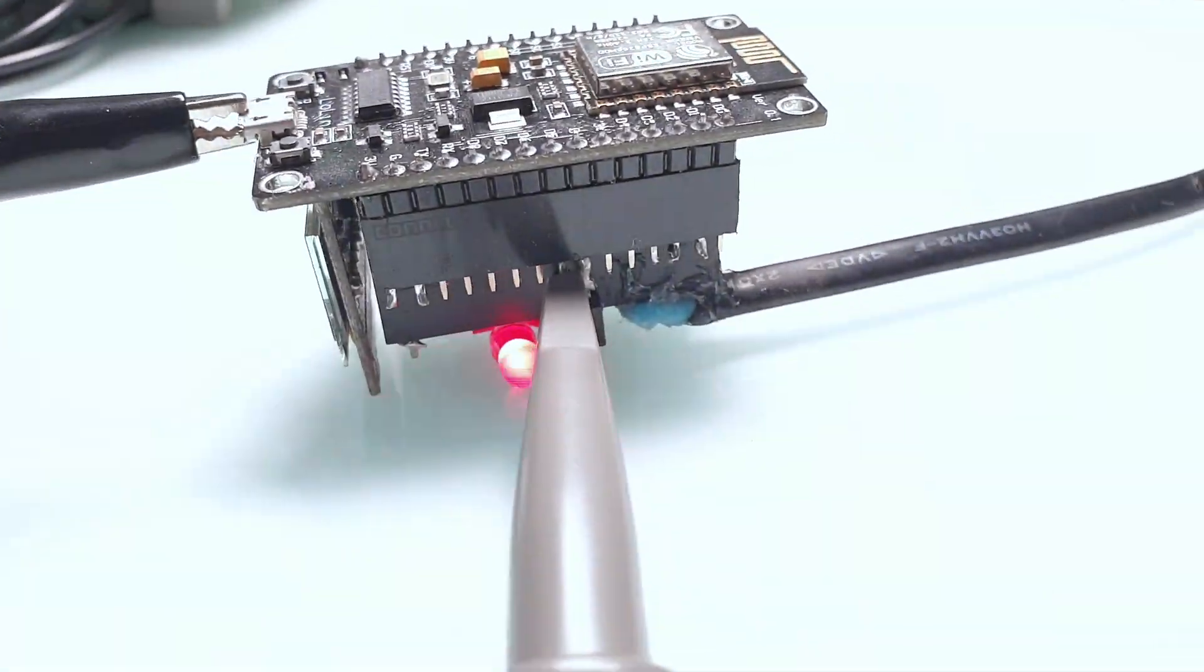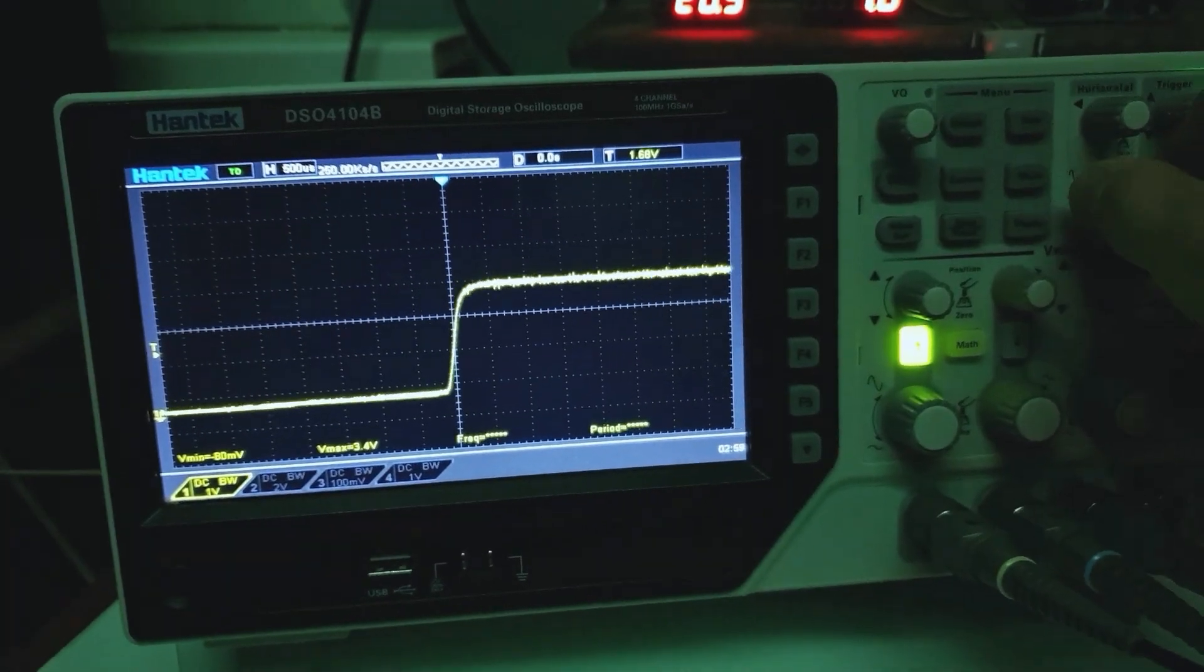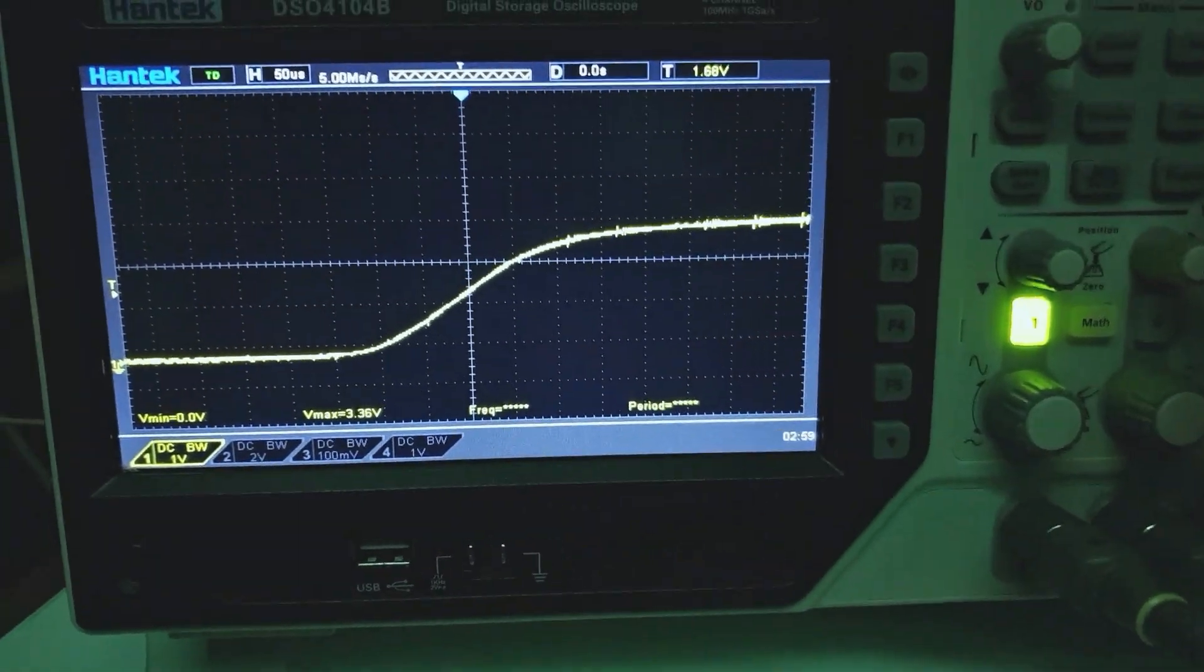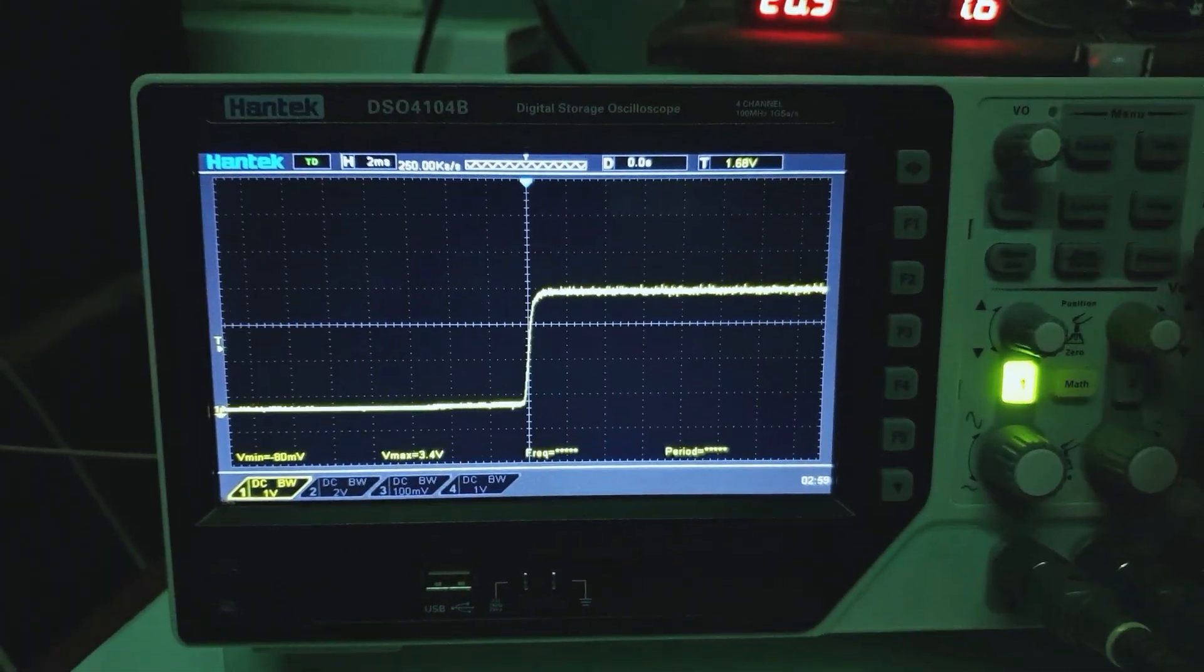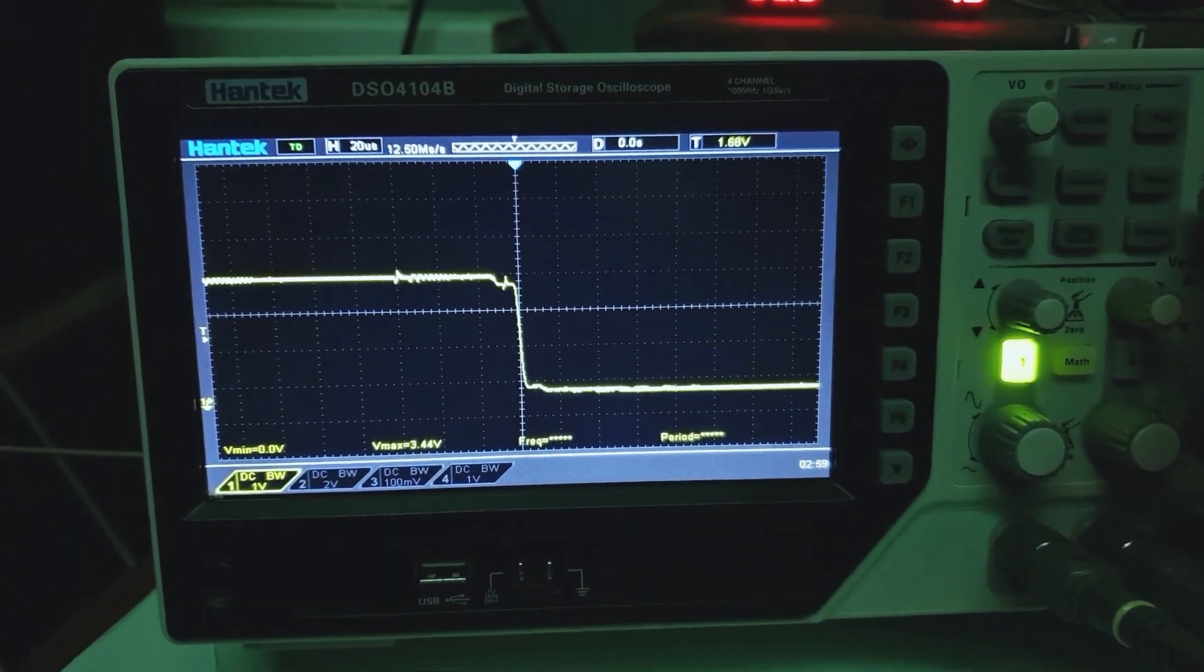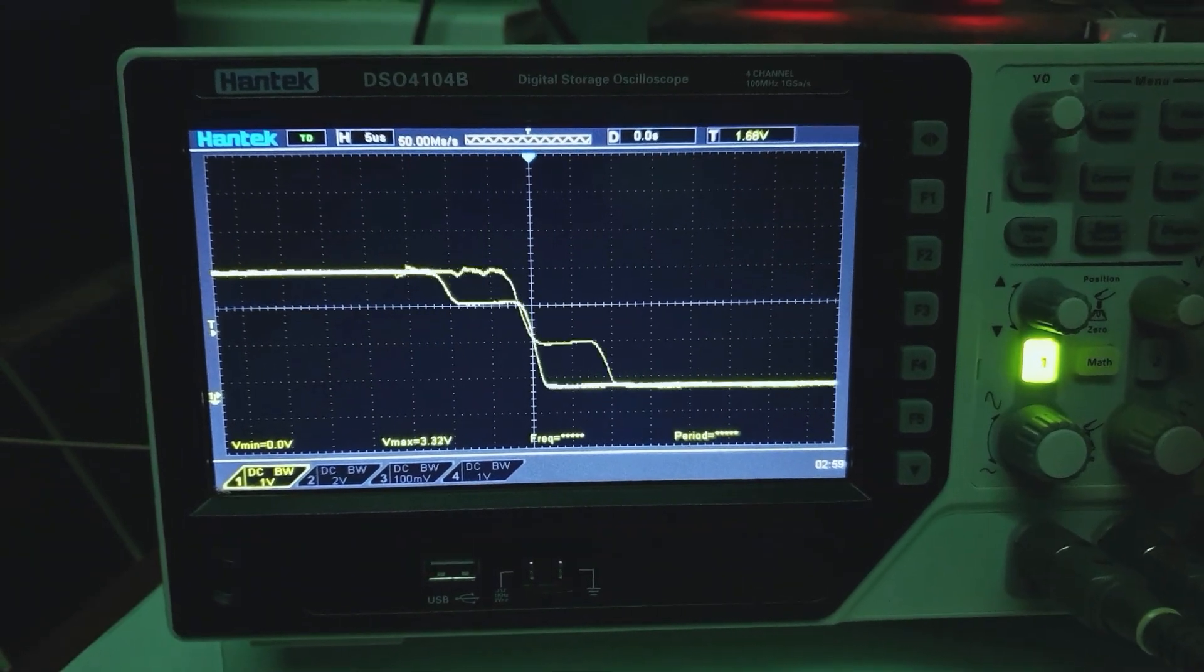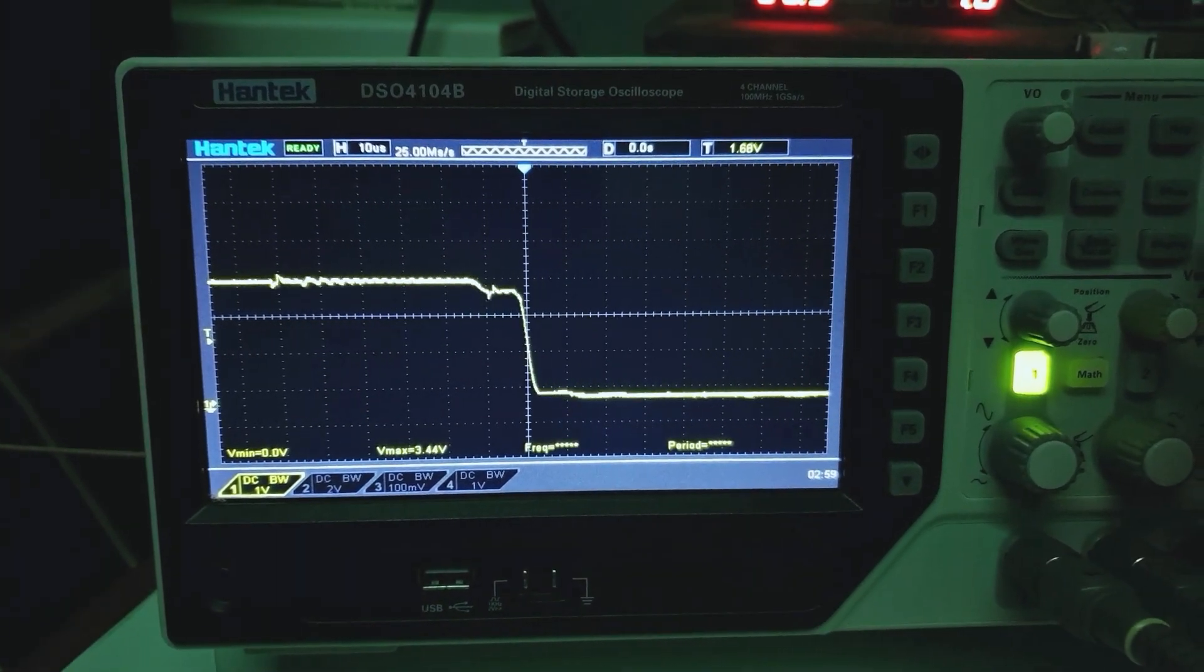Luckily at this point I received my new oscilloscope, so understanding the problem became much easier. I found an interesting behavior. At the output of the optocoupler, the rising edge of the signal is fine, but the falling edge is not smooth and has some weird jumps. It took quite some time for me to understand what causes that jump.